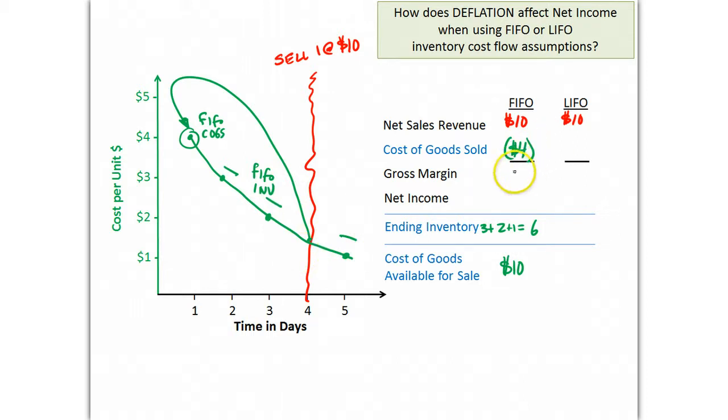What this means is that the gross margin is going to be $6. We don't know what the net income will be because there's probably some operating expenses, but compared to LIFO, we'll see that the net income under FIFO is actually going to be lower than LIFO.